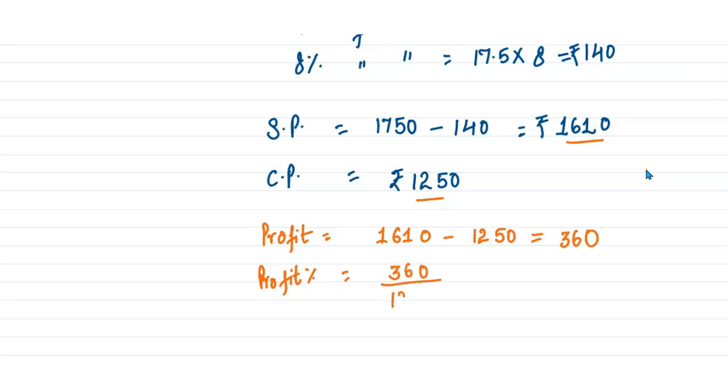So what will be the profit percentage? The profit, that is the increase of 360 over 1250 into 100. This can be cancelled and it will be equal to 28.8%. So this is the profit percent which the shopkeeper is getting.